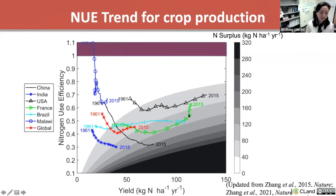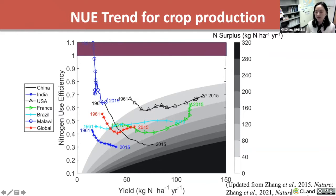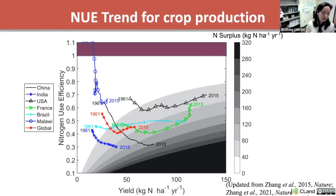Only a few countries such as the US and France have shown an increase in nitrogen use efficiency in recent decades. But even with the increasing NUE in the US, you do not necessarily see a reduction in nitrogen surplus. So with all the amazing progress in crop and fertilizer technologies, why haven't we seen a worldwide increase in nitrogen use efficiency yet? What are the reasons behind this apparent paradox?